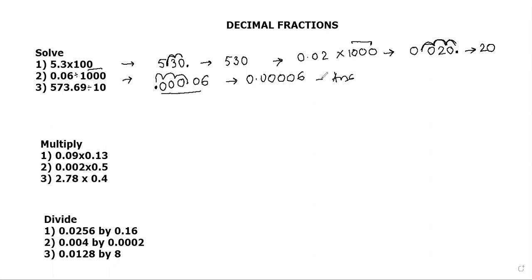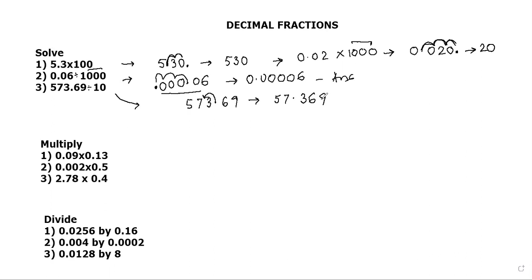The moment you see a multiplication or a division, either move the decimal on the right or on the left. For division, the decimal will move on the left hand side. How many places? Only one zero, so one place. Write the number 573.69. The decimal moves one place, so the answer is 57.369. Whether you get any complex number or complex division, you can solve it by moving the decimal right or left depending on whether it's multiplication or division.